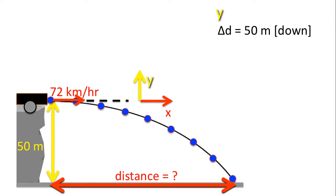In the Y direction, we know that the cannonball is going to drop 50 meters. So its displacement is 50 meters down. We also know the acceleration. It's 9.8 meters per second per second. That's down. We also know that our initial velocity in the Y direction is zero. How do we know that?